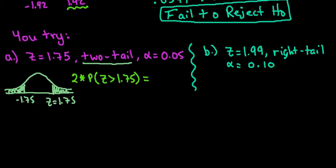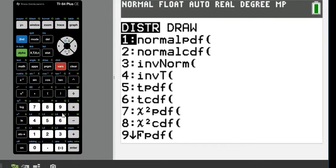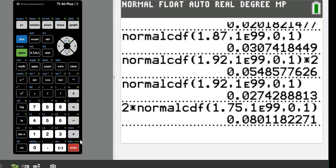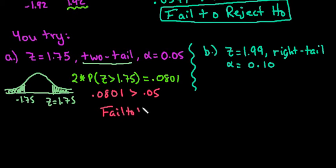And then we would go into our calculator. And you can do the two times first if you would like to and then go into the normal CDF. Change this to 1.75. And then just go down and hit enter and enter again. And we get 0.0801. So 0.0801. Now what we're going to do is we're going to compare our p-value to our alpha level. And we can see that it is greater than, so we would fail to reject H sub 0.